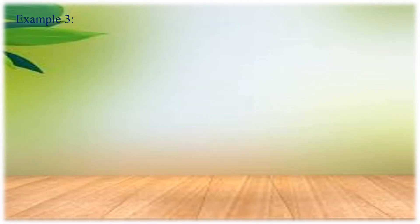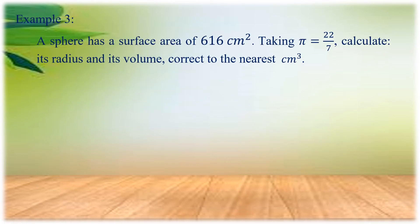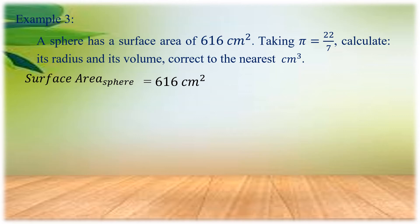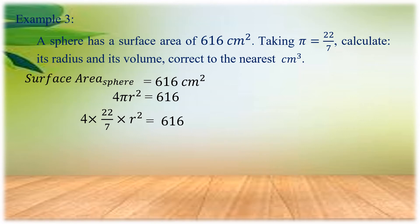Let us have example number 3. A sphere has a surface area of 616 square centimeters. Taking pi equal to 22 over 7, calculate its radius and its volume, correct to the nearest cubic centimeter. We substitute the surface area of 616 into the formula 4πR squared equals 616. Substituting pi as 22 over 7, we have 4 times 22/7 times R squared equals 616. We are going to solve for the radius first.